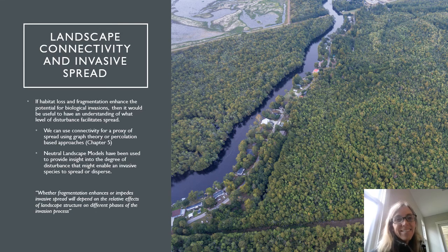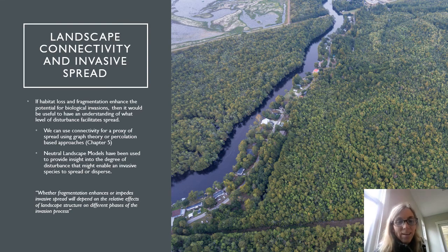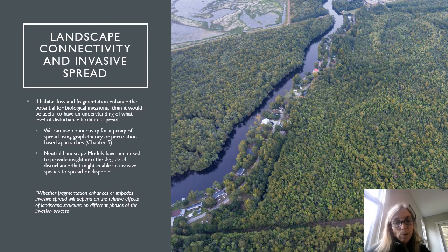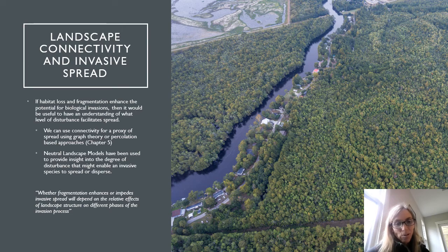If habitat loss and fragmentation enhance the potential for biological invasions, it would be useful to understand what level of disturbance facilitates that spread. We can use connectivity as a proxy for spread using tools discussed in chapter five, such as graph theory or percolation-based approaches. Neutral landscape models have also been used to provide insights into the degree of disturbance that might enable an invasive species to spread. Whether fragmentation enhances or impedes invasive spread depends on the relative effects of landscape structure on different phases of the invasion process and on the organism itself.